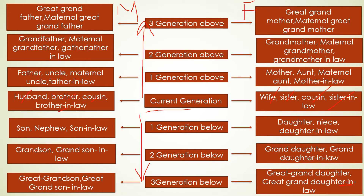In the first generation, females include: mother, aunt, maternal aunt, and mother-in-law. On the male side, we have father, uncle, maternal uncle, and father-in-law.